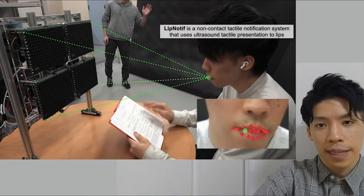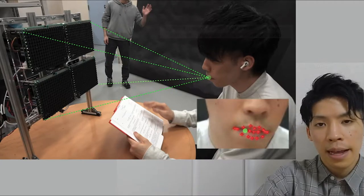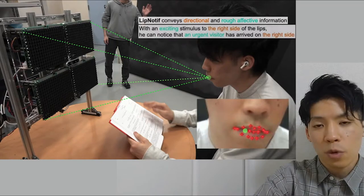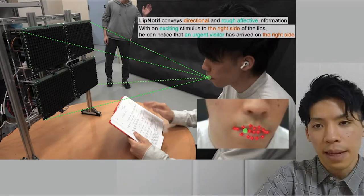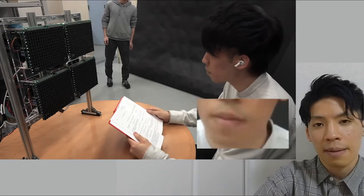Lipnotif allows the user to receive information using only lips without sight, hearing, or hands. Lipnotif can convey directional and affective information. For example, with a strong stimulus to the right side of the lips, he can notice that an urgent visitor has arrived on the right side.